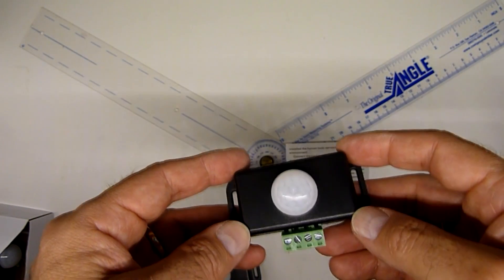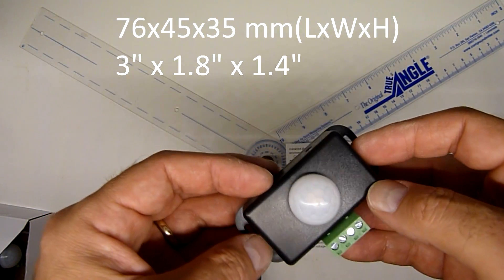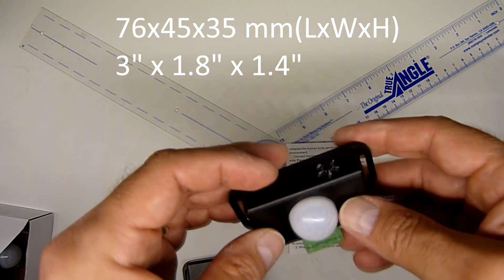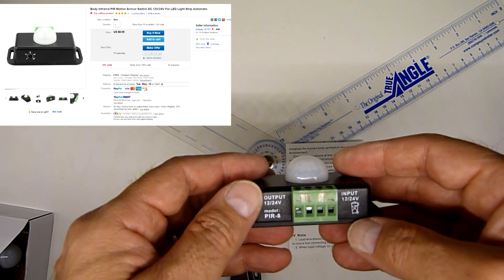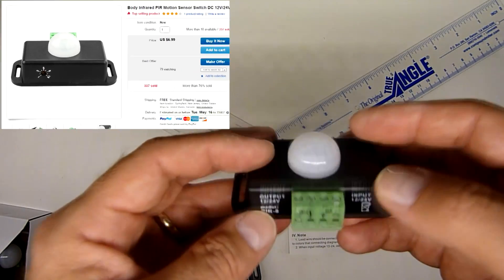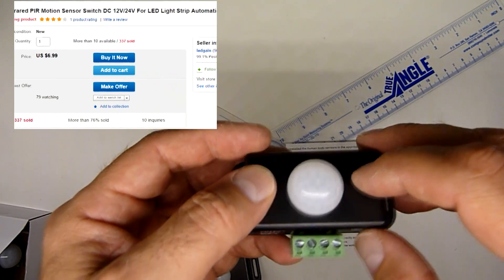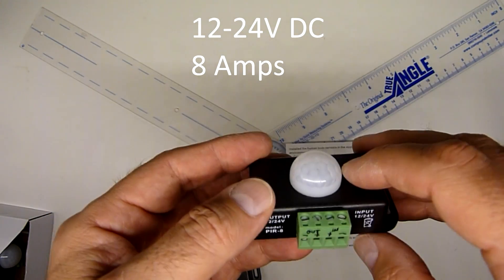The first one we're going to review is this brown one. It's about 3 inches by 1.8 inches. It's a very common one that can be procured domestically and internationally. It's rated at 8 amps and 12 to 24 volts DC.